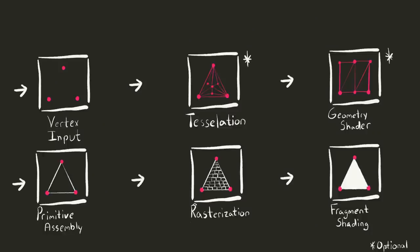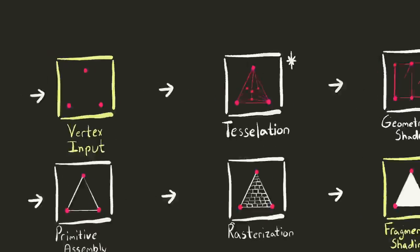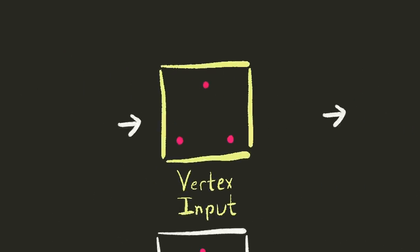In the second video of this series, we talked about the graphics pipeline. Several of the stages in this process involve shaders. We will talk about the two most common shader stages today: the vertex shader and the fragment shader. If we look at the graphics pipeline, we can see that the vertex shader runs first.